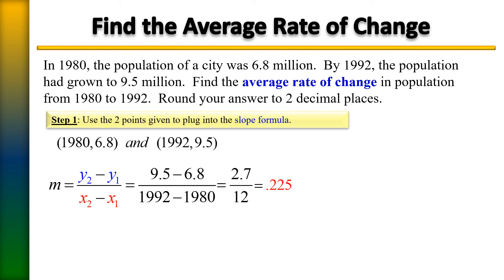Let's round that to two decimal places. Recall that if this number is five or more, which it is, it makes the next number one more. So this number two becomes a three, which is 0.23. The average rate of change is an increase of approximately 0.23 million per year.